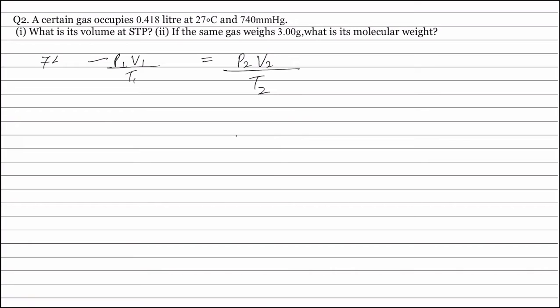P1 is given as 740 millimetres of mercury. V1 is given as 0.418 litres. T1 is given as 27 degree centigrade and to change it into kelvin, we will add 273 and we get 300 kelvin.